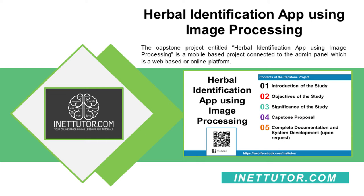The capstone project entitled Herbal Identification App Using Image Processing is a mobile-based project connected to the admin panel, which is a web-based or online platform. The application is used to capture an image using the device camera. Based on the image taken, the application will compare it to the database and collection stored in the admin panel, and will then display the result with accuracy rate.